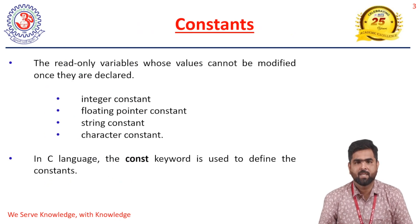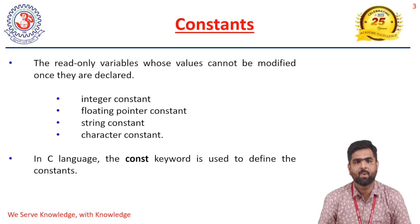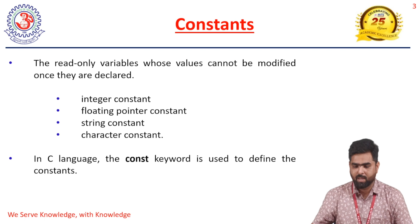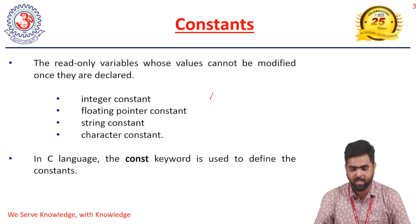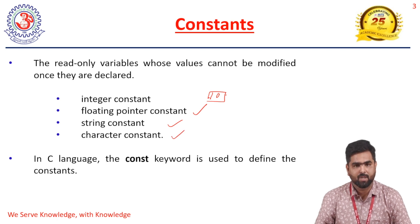First we will see what a constant is. A constant is a read-only variable whose value cannot be modified once it is declared. Constants may be integer constants — for example, the value 10 in a C program is an integer constant — floating point constants, string constants, and character constants.